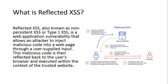Reflected Cross-Site Scripting, also known as non-persistent XSS or Type 1 XSS, is a web application vulnerability that allows an attacker to inject malicious code into a web page through user-supplied input. This malicious code is then reflected back to the browser and executed within the context of a trusted website, allowing the attacker to steal information or perform actions on behalf of the victim. As shown in the figure, the attacker crafts a URL with malicious code and sends the link to the victim, who is tricked into opening that link, requesting the malicious URL from the website. The website includes that malicious code in the response, the victim's browser interprets it as part of a legitimate web page and executes it, and the user's sensitive information is sent to the attacker-controlled server.